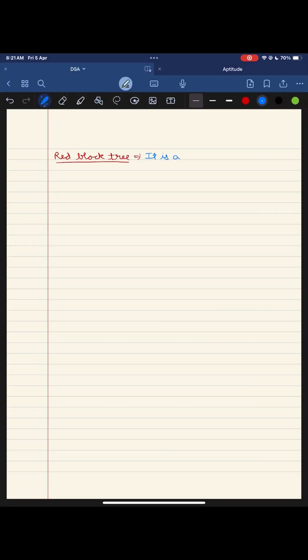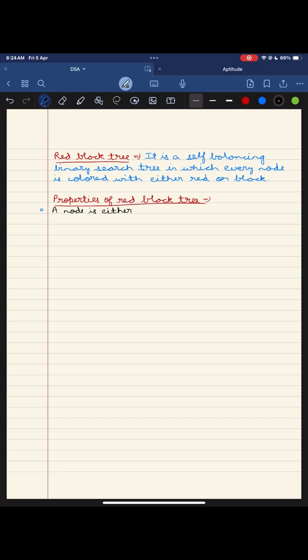Hello guys, welcome to the exploration of red-black trees, a fascinating topic in computer science. Red-black trees are special kinds of binary search tree that have some unique properties. Picture them as a tree where each node wears either a red hat or a black hat.